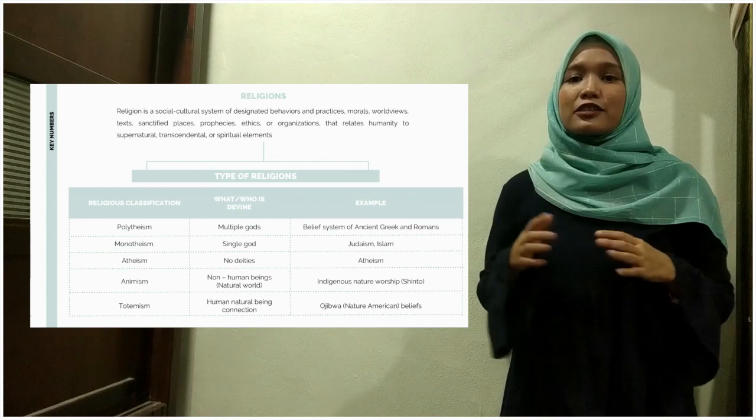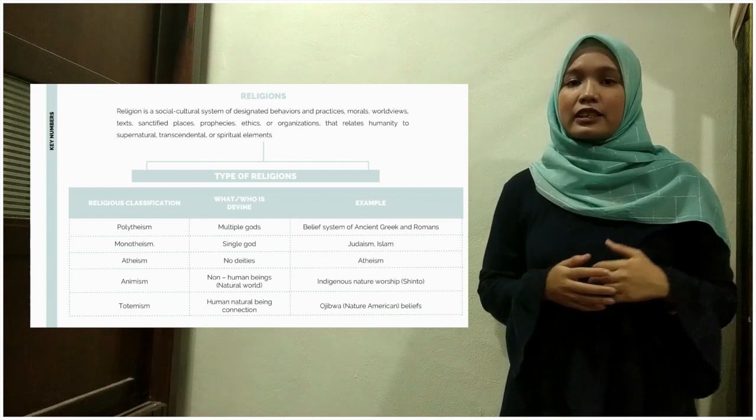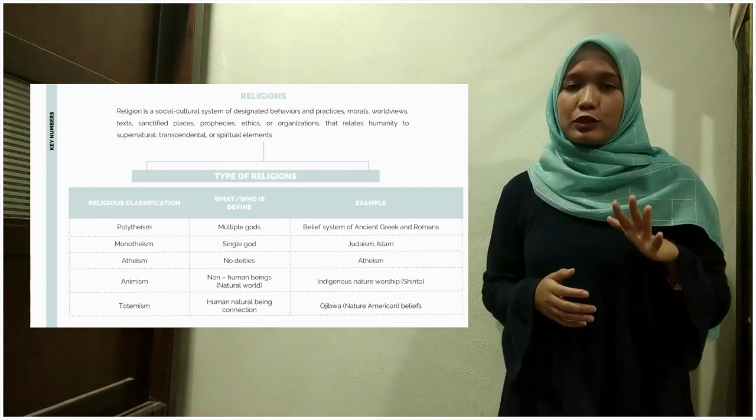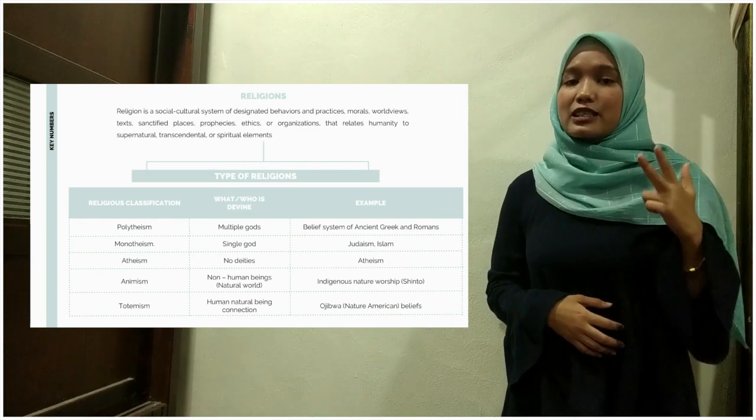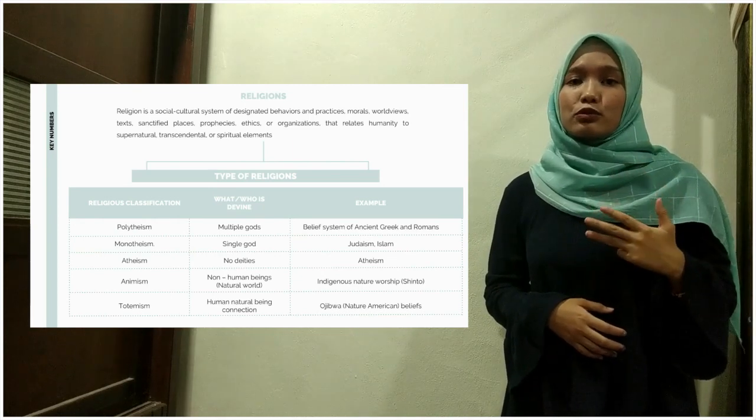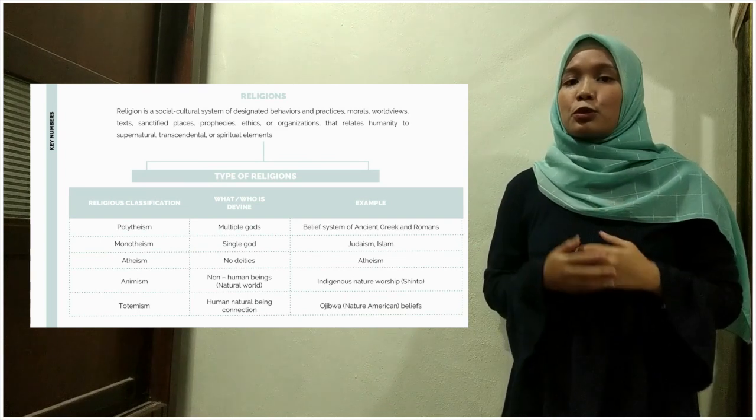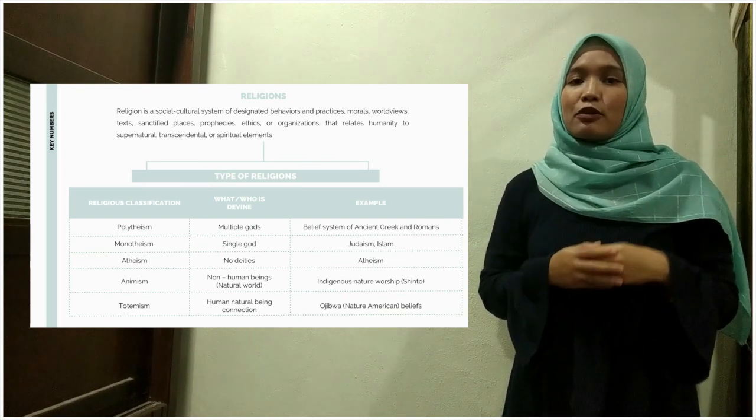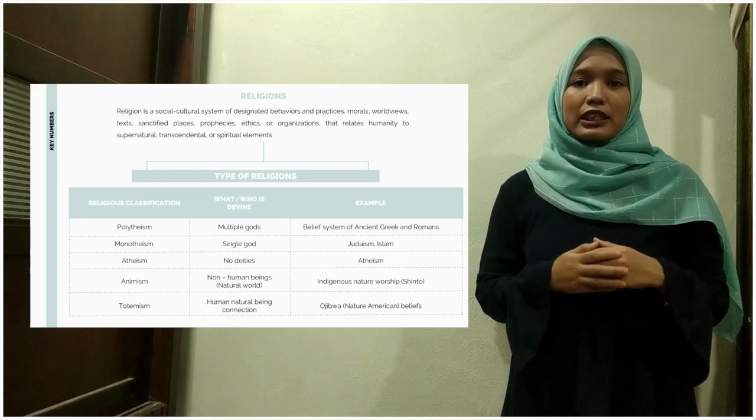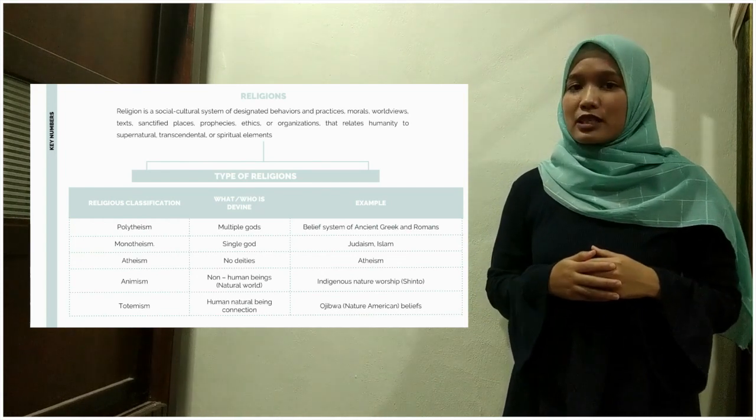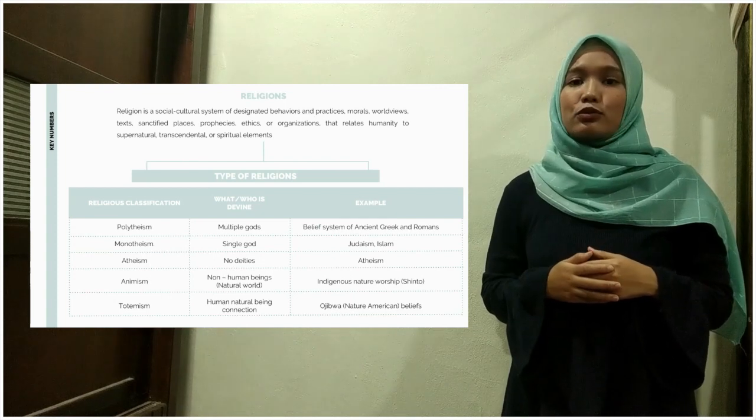Now we will proceed to the classifications of religion. There are five types of religions: Polytheism, Monotheism, Atheism, Animism, and Totemism. What is Polytheism? Polytheism is a religion-style belief that there are multiple gods in their life. It is a belief system of ancient Greek and old Roman.